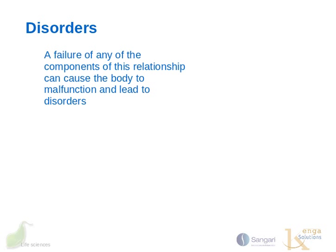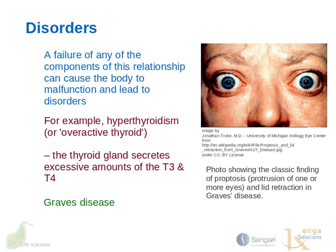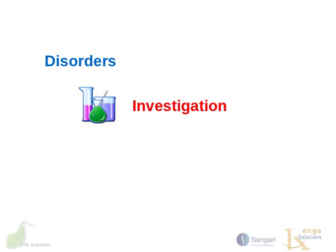Let's look at disorders. A failure of any of the components of this relationship can cause the body to malfunction and lead to disorders. For example, hyperthyroidism, or overactive thyroid, happens when the thyroid gland produces and secretes excessive amounts of free thyroid hormones, T3 and T4. One example of hyperthyroidism is Graves' disease. Patients suffer from a number of physical and psychological symptoms, and sometimes they are quite severe. One visible manifestation often seen with Graves' disease is the classic protrusion of the eyes, or proptosis. As you are going to be doing an investigation to research disorders caused by under and over secretion of at least one hormone, with different learners researching different hormones, we won't cover any more disorders here. We look forward to seeing what you come up with in your investigation.